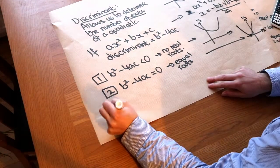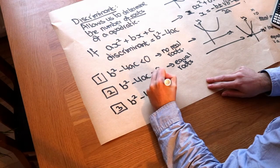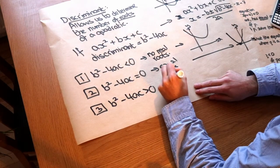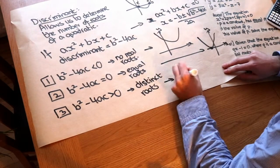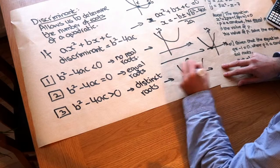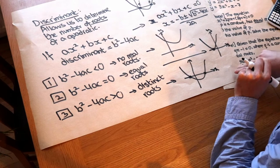And then the final situation is where b² - 4ac is greater than 0, and in this case we get two distinct roots. And if we were to draw that, it would look like this. So it would cross the x-axis in two different places. We have two distinct different roots.